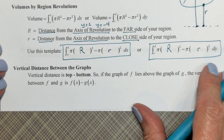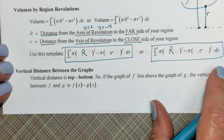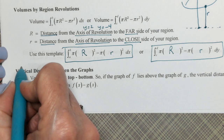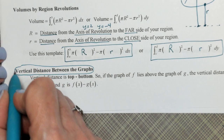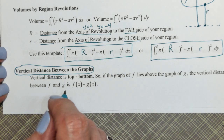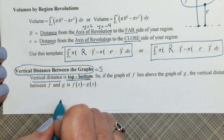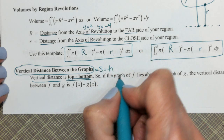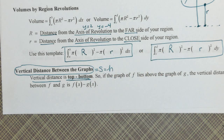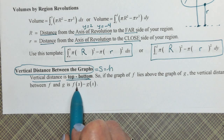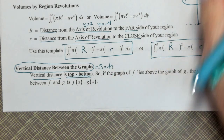Another thing they can ask, besides area and volume, is about the vertical distance between two graphs. Vertical distance is top minus bottom — that's your s, or you could call it h for height. When you're asked about vertical distance, that's just your top minus bottom. So if f is above g, it's f minus g.